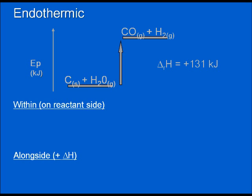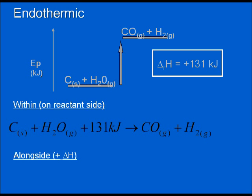The positive corresponds to the fact that that's an input of energy. If I want to write that energy value as part of the equation, that positive means that was something I had to input. It was a requirement for the reaction to happen. Placed within the equation, I have carbon plus water vapor plus 131 kilojoules yields carbon monoxide and hydrogen gas.